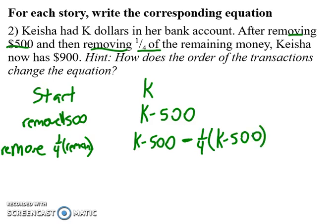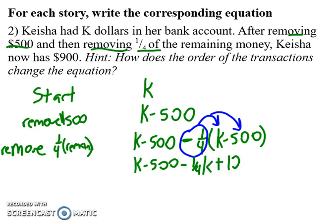When I do that, I've got to pay attention that I take this one-fourth, this negative one-fourth, and distribute it accordingly. So that this would give me K minus 500 minus one-fourth K. And then a minus and negative gives me plus 125. And if I combine my like terms, one minus a fourth gives me three-fourths K. Negative 500 plus 125 gives me negative 375.